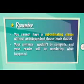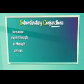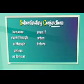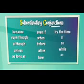Things to remember: you cannot have a subordinating clause without an independent clause — that is, your main clause. Your sentence wouldn't be complete, and your reader will be wondering what happened. So let's list some subordinating conjunctions: because, even though, although, unless, as long as, even if, when, before, after, how, by the time, if, while, as, etc.